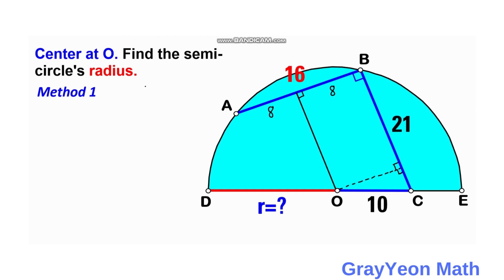Since we already have three 90-degree angles inside this quadrilateral, the fourth angle must also be 90 degrees. So the quadrilateral is a rectangle. Therefore, this side should also be 8 units.